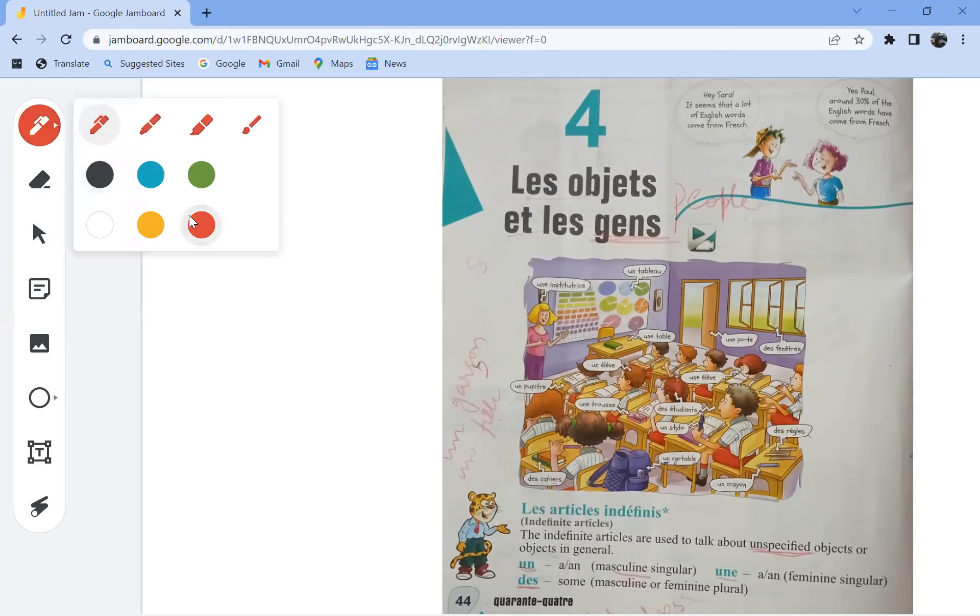So today let's begin with a new chapter of our book On Chante Part 1, which is Lesson 4. Les objets et les gens. Objets means objects and gens is the French word for people.